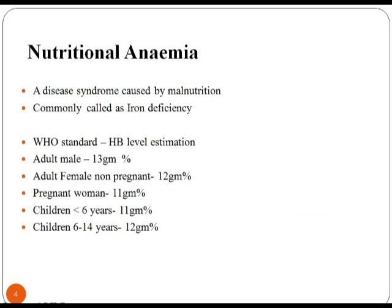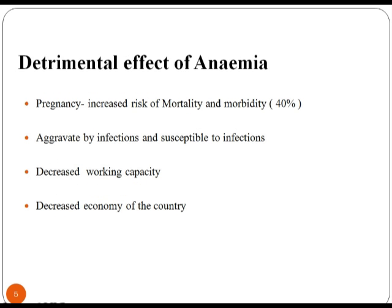Nutritional Anemia. A disease syndrome caused by malnutrition, commonly called iron deficiency. According to the World Health Organization, hemoglobin level estimations are: adult male 13 grams, adult female non-pregnant 12 grams, pregnant women 11 grams, children less than 6 years 11 grams, children between 6 to 14 years 12 grams. Effects of anemia include increased risk of mortality and morbidity in pregnancy, aggravation by and admission to infections, decreased working capacity, and decreased economy of the country.